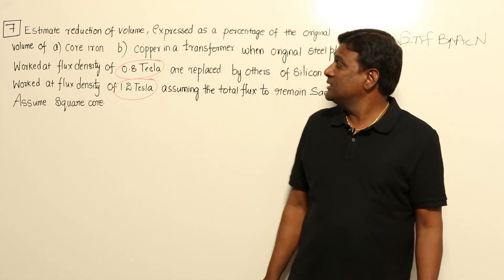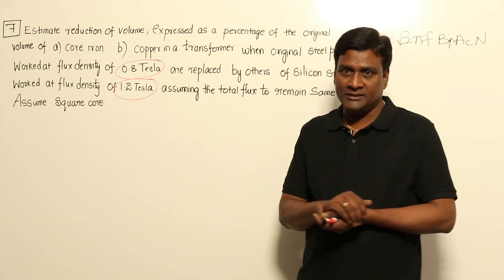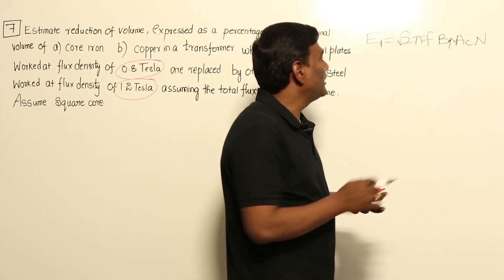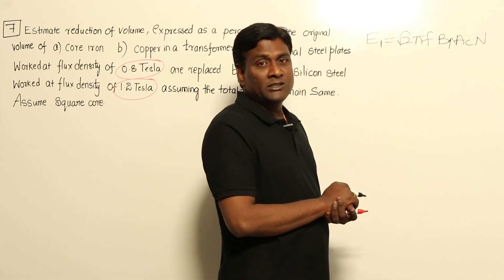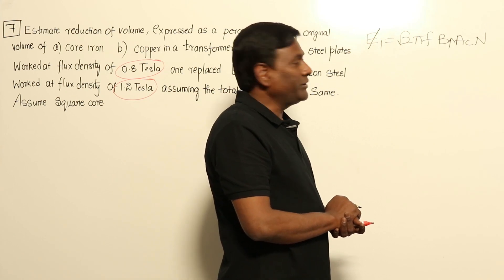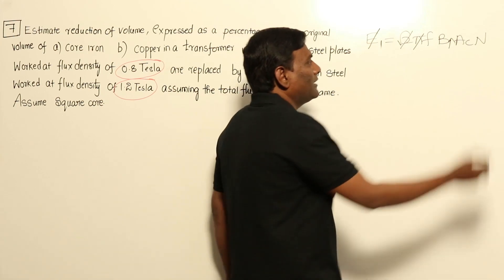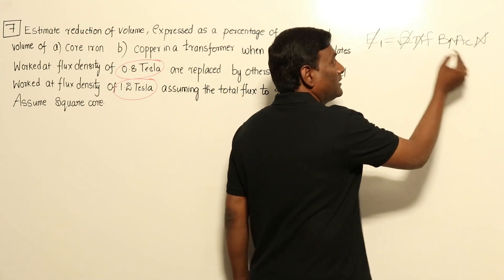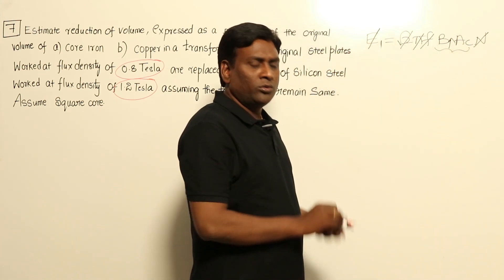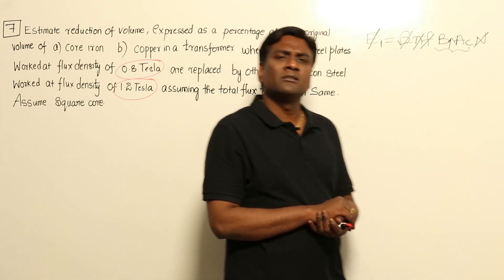Now, is this a design engineer question? Yes, it is a design engineer question because flux density is being changed. But if you think of total flux in a given transformer, V1 supply voltage is going to be constant, so E1 is going to be constant. Root 2 pi is a universal constant, and for an operating engineer, the number of turns is going to be constant. So if V1 is constant, E1 should be constant, meaning the operating flux of a transformer will be constant.